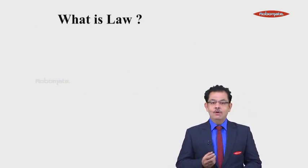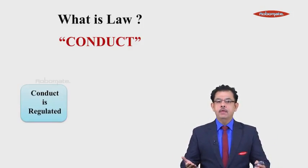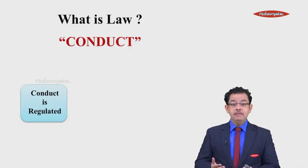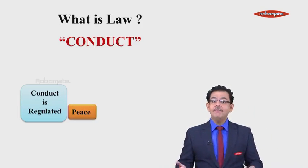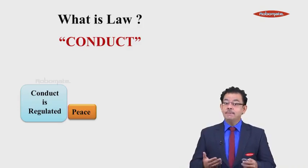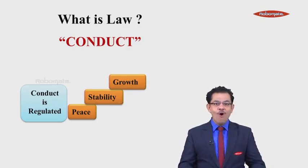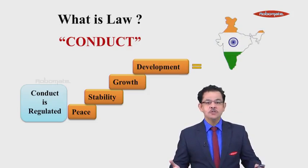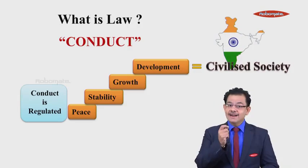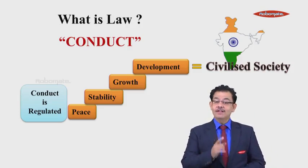The very first point is: what is law? Law means the conduct. It is the rules and regulations to regulate the conduct of the people at large. Because if the conduct of the people is regulated, governed, rational, then automatically we will have peace in the society. When there is peace in the society, we will have stability. When we have stability, we will have growth. When we have growth, we will have development in the society — and that is what a very civilized society is. So the conduct of the people must be regulated. To regulate that conduct, we need a guardian, a parent called law.